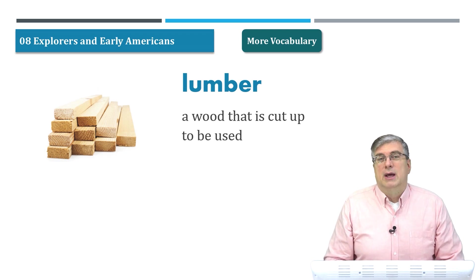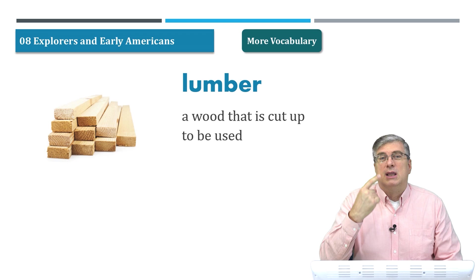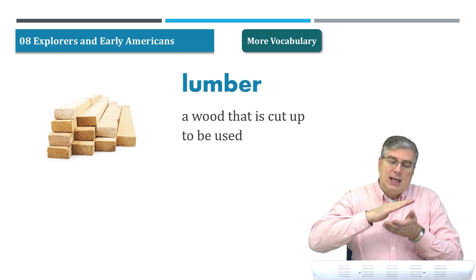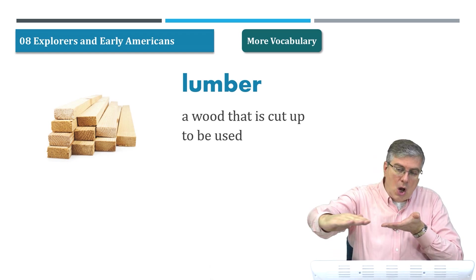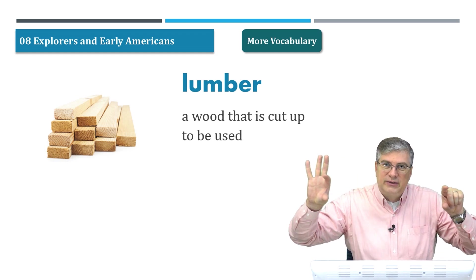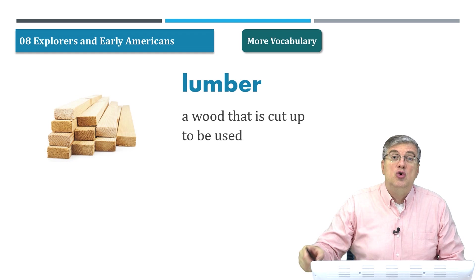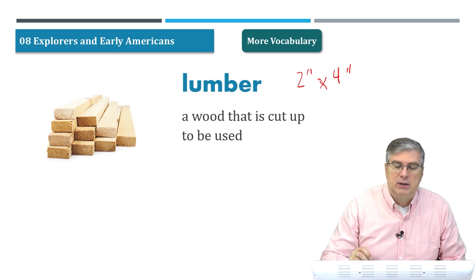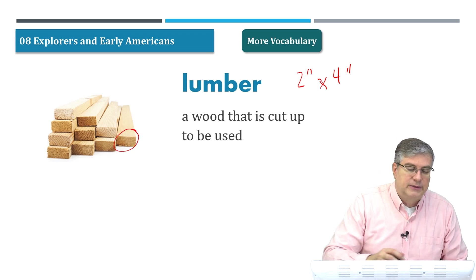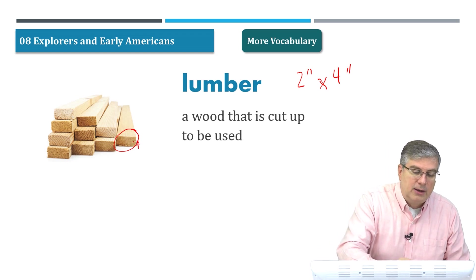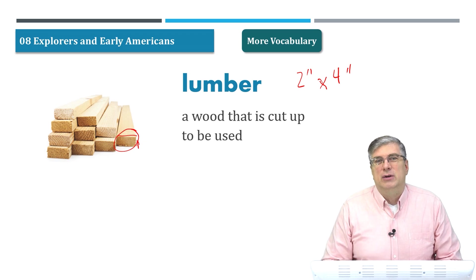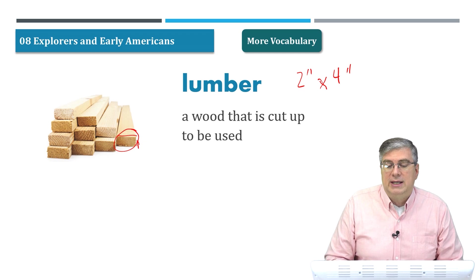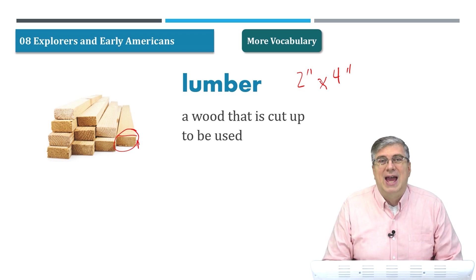Lumber is another type of resource. Lumber comes from trees. If you cut down a tree and cut it into very long parts, you have a long piece of wood. The standard size is two by four — two inches by four inches. These are two-by-fours. That is a standard size for lumber that is used to build houses. Usually we make houses out of lumber.